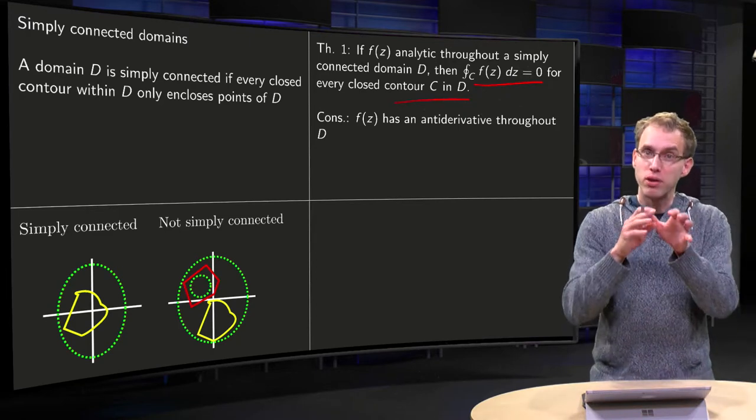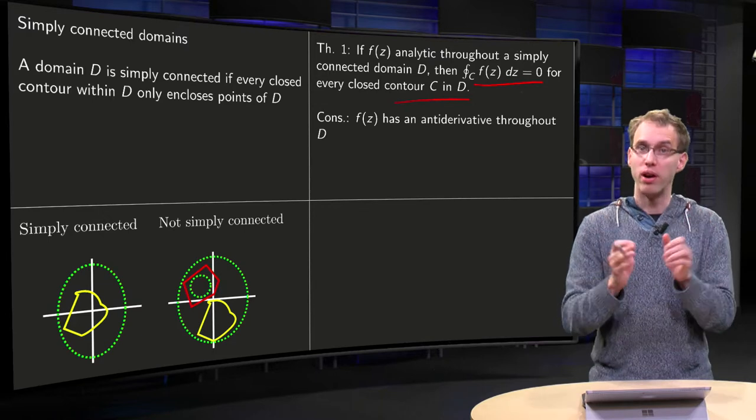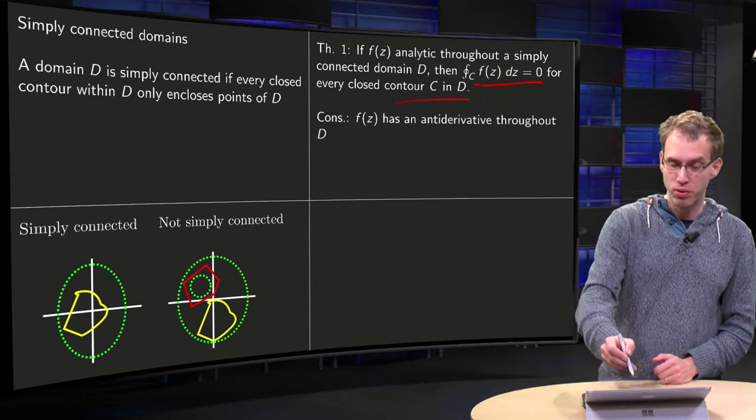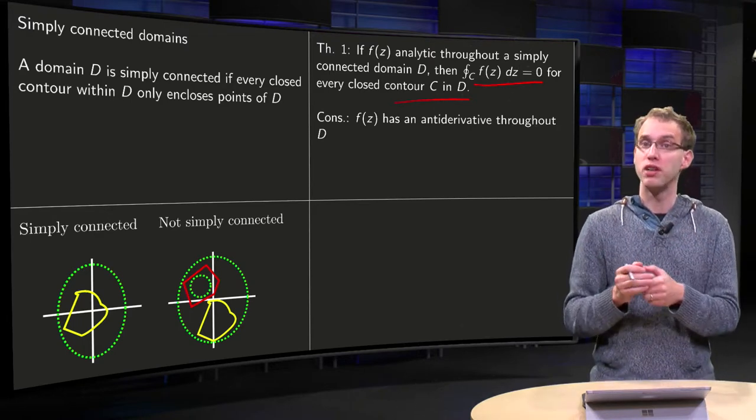So if your domain is simply connected, then it doesn't matter how you draw your contour, your integral will always be zero. And a small consequence, of course,